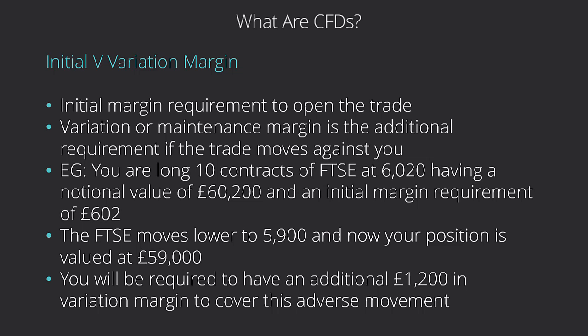Now let's say the FTSE moves lower to 5,900. Your position is now valued at £59,000, and you'll be required to have an additional £1,200 in variation margin to cover this adverse move. There'll be a mark-to-market revaluation of your position, and you need to be able to fund this position based on what you've got in your account. They're going to be revaluing it daily to see exactly what they need to cover their own risk and make sure you don't get wiped out.